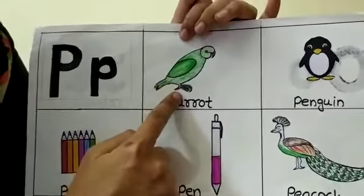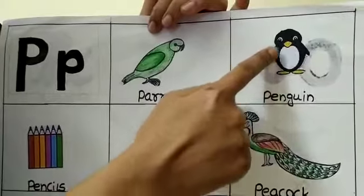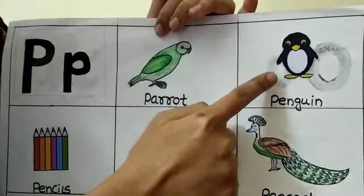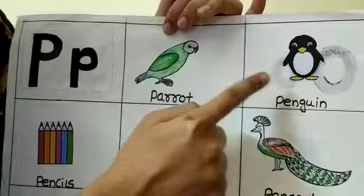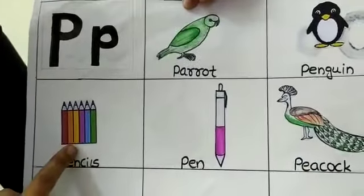P, P, parrot. P for penguin. This is P for penguin. This is P for pen.